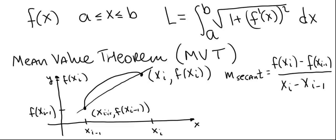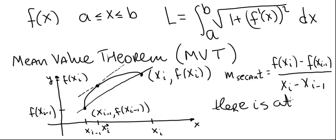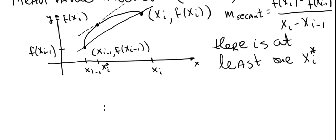Here's what the Mean Value Theorem says. When we look at the graph, we see at least one point where the tangent line to the graph at that point is parallel to the secant line. The slope of the tangent line is the derivative evaluated at the x-coordinate of the point. Let's call that point xi star. According to the Mean Value Theorem, there is at least one value of xi star, with xi minus 1 less than xi star less than xi.